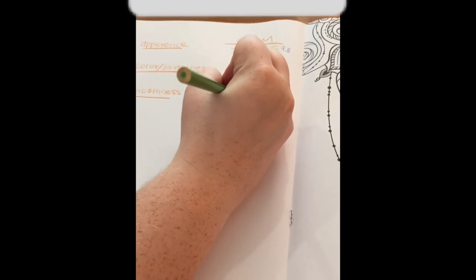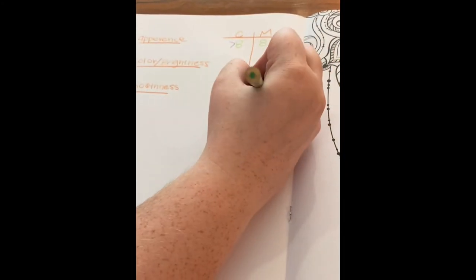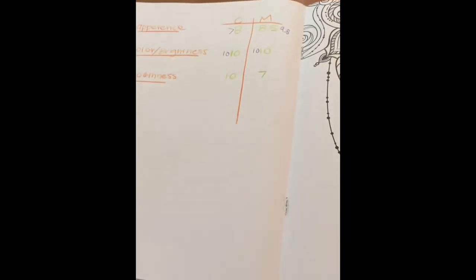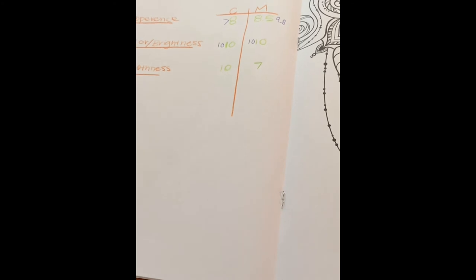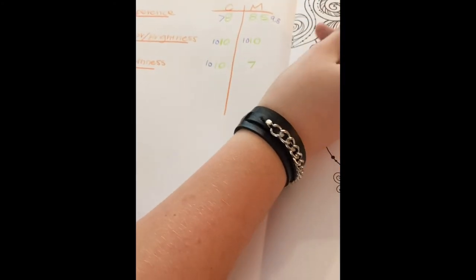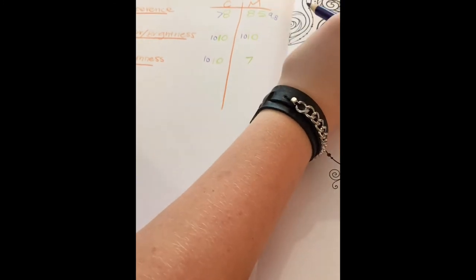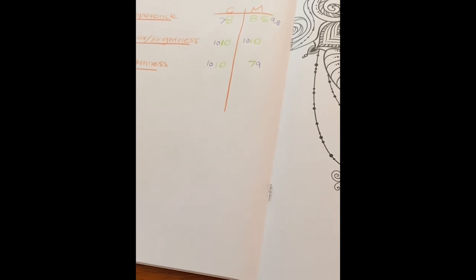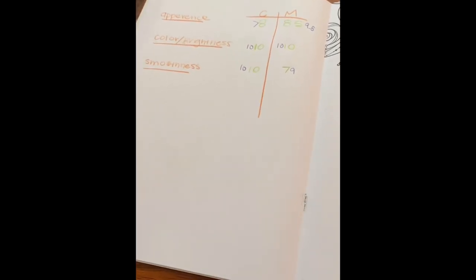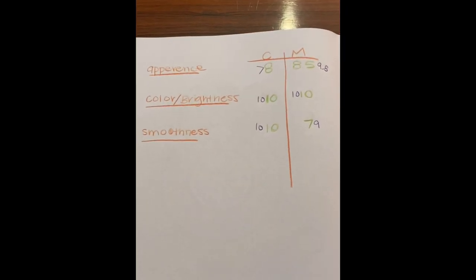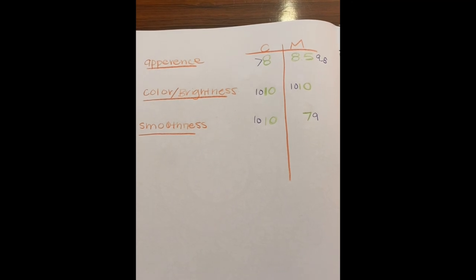Smoothness: I would give Crayola a 10, but I give Brad Mondo a seven. For smoothness I give Crayola 10 out of 10. For Brad Mondo I give that one a solid nine.